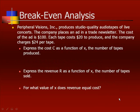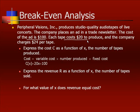Let's do an example. Peripheral Visions, Inc. produces studio-quality audio tapes of live concerts. The company places an ad in a trade newsletter. The cost of the ad is $100. Each tape costs $20 to produce, and the company charges $24 per tape. The first part says express the cost as a function of x. You've got two different types of costs. You've got the $100 cost up front, and then you've got the $20 per each tape for a cost. So when you set up your cost function, we've got 20x, which is your variable cost times the number of tapes, plus your fixed costs. So our cost function is 20x plus 100.